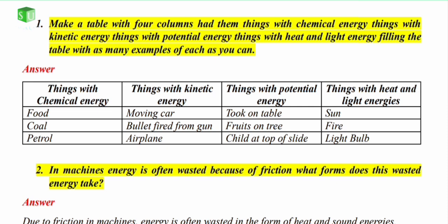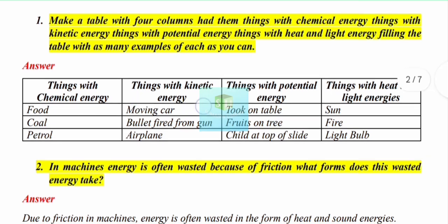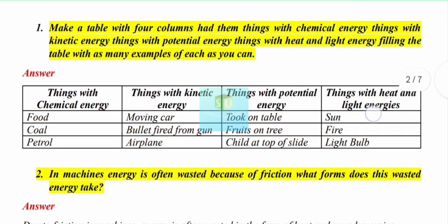Head the columns: things with chemical energy, things with kinetic energy, things with potential energy, and things with heat and light energy. Fill the table with as many examples of each as you can.